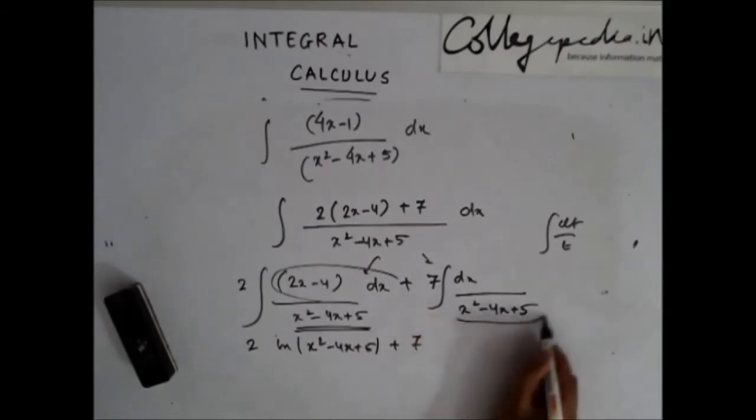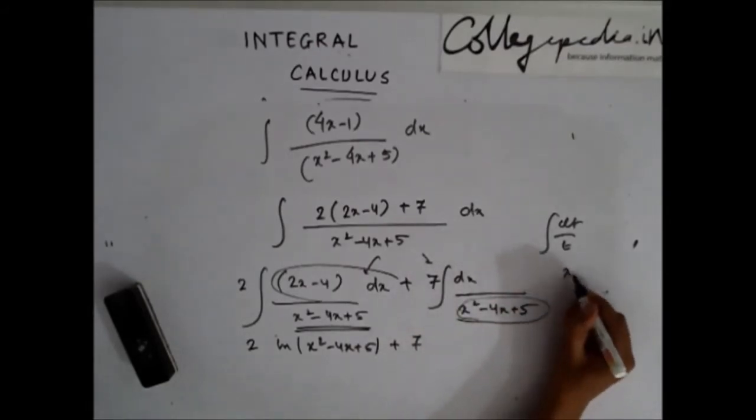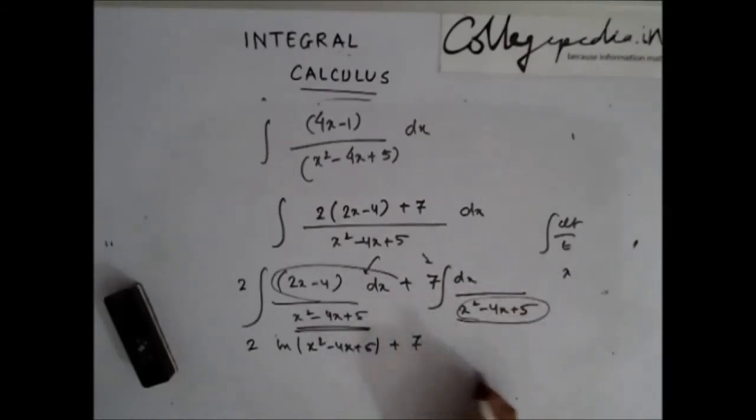And to solve this part, again, I need to express this of the form of x square plus a square or x square minus a square so that we can apply some standard formula. So I will write this as x minus 2 whole square plus 1.